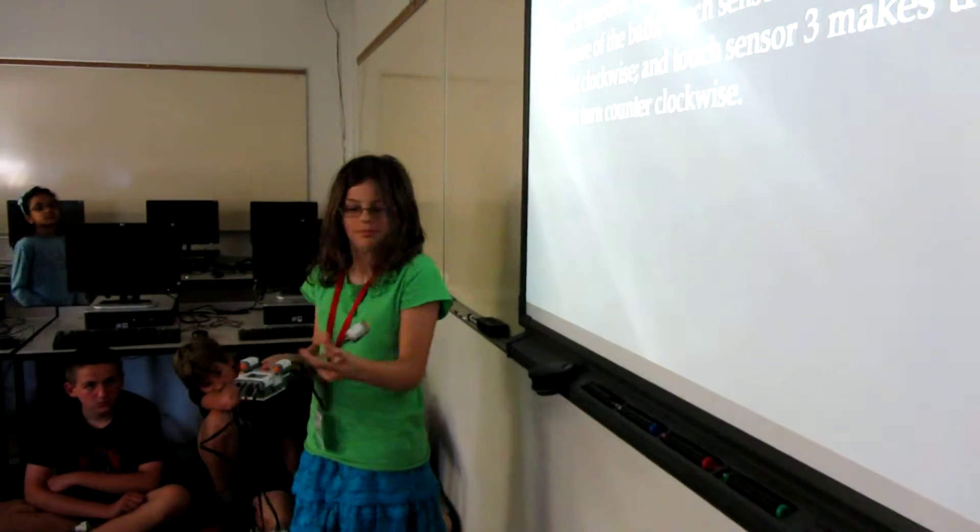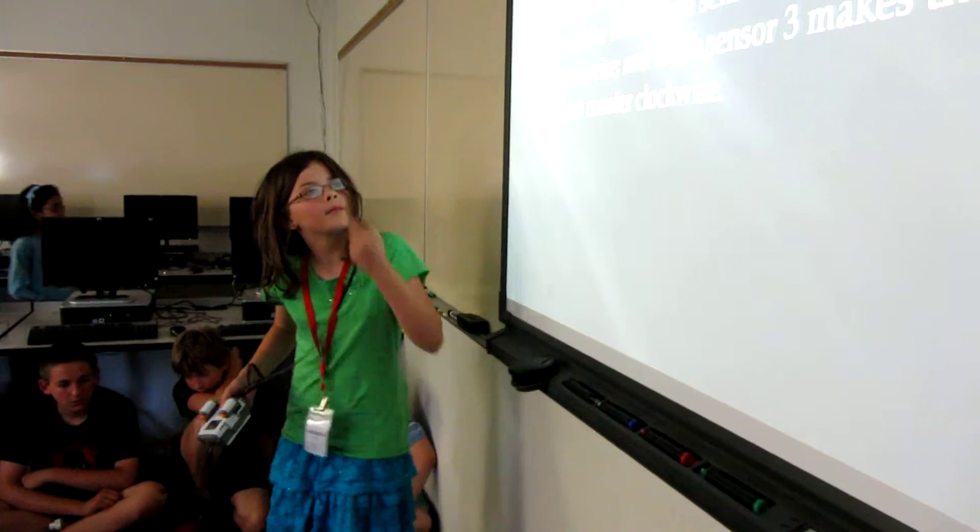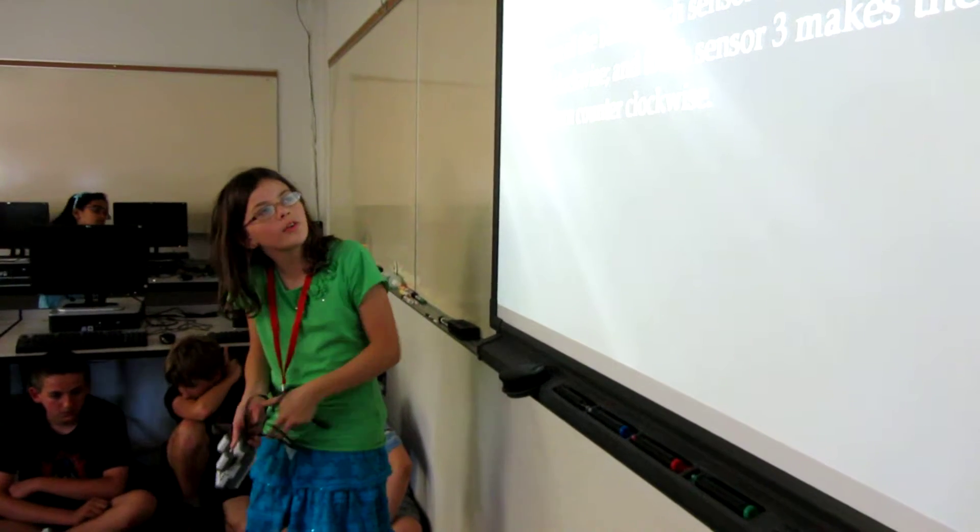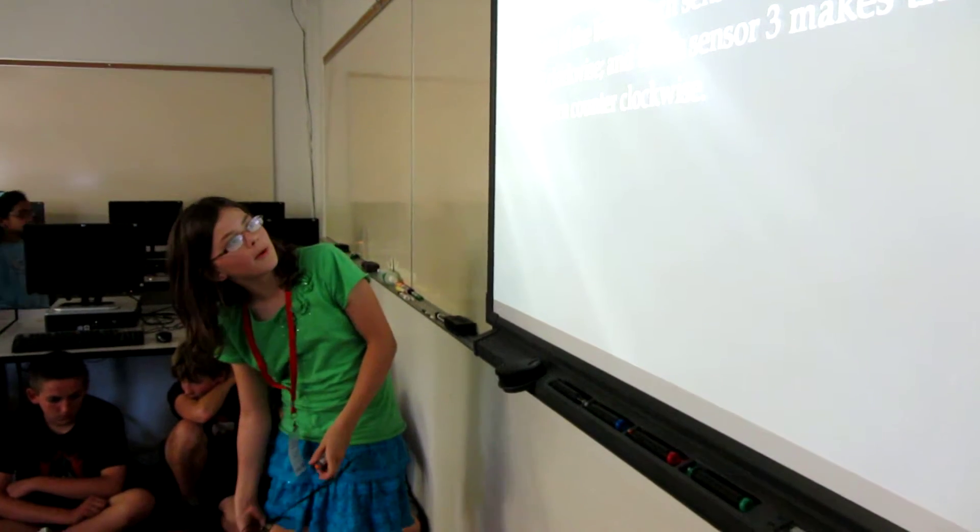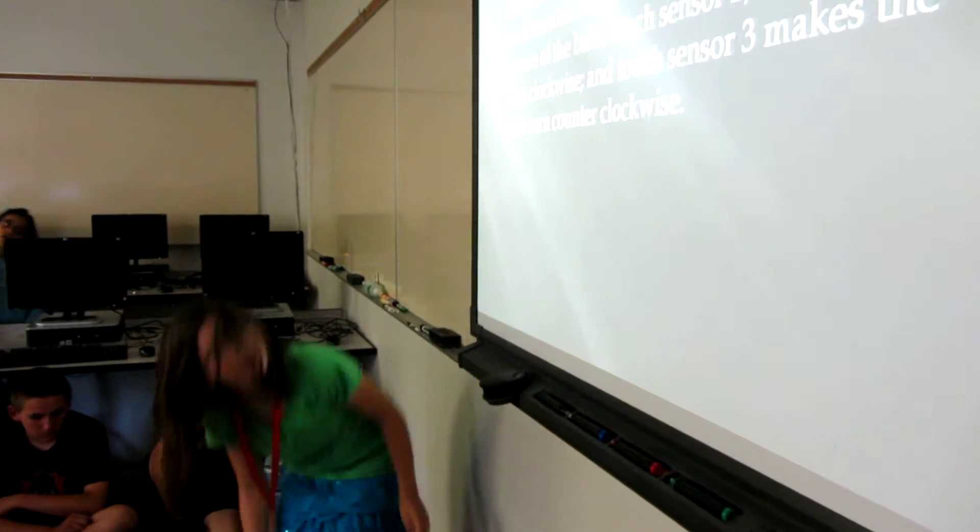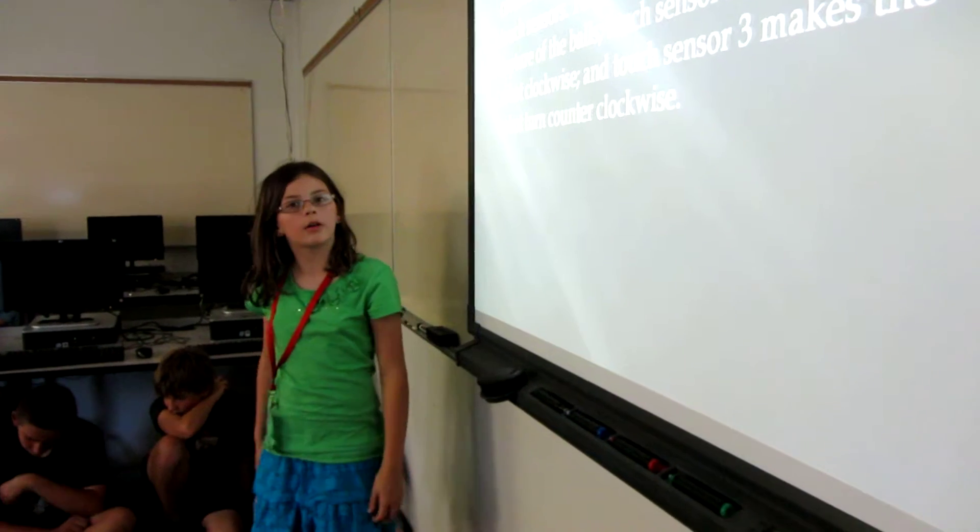One, two, and three. Touch sensor one controls the capture of poles. Touch sensor two turns the robot clockwise. Touch sensor three makes the robot turn counterclockwise.